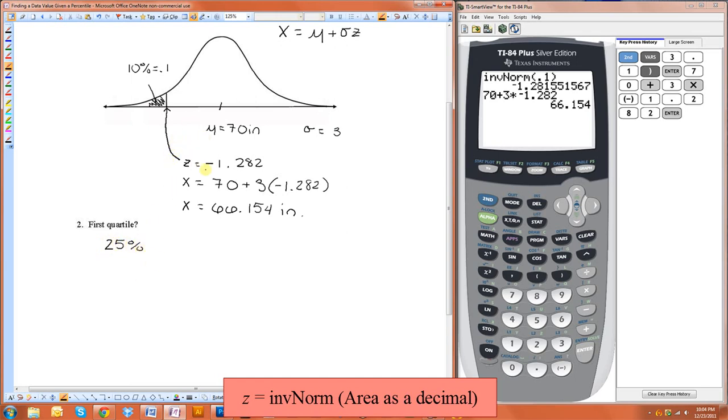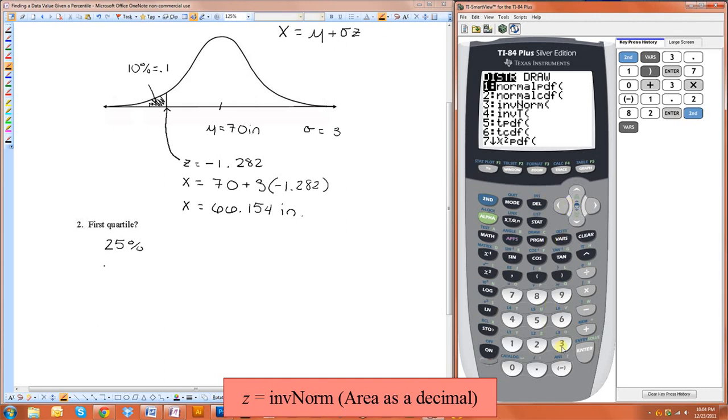Essentially we want to find the z-score that corresponds to 0.25. We're going to do invNorm of 0.25, and that will give us our z-score.